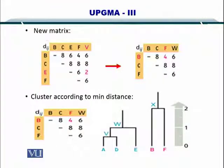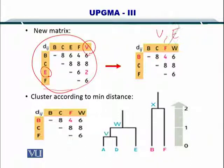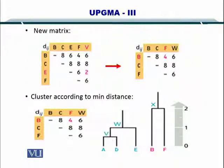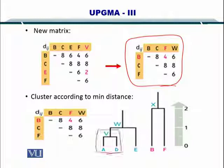So let's see how it goes. So this was your distance matrix with V and E. Now, V and E have been replaced by W here. So here is W. And the distances 6, 8 and 6 were just computed in the previous slide. And therefore, you have the updated distance matrix. So you would have noticed that our distance matrix is shrinking while we are clustering different sequences and clusters.